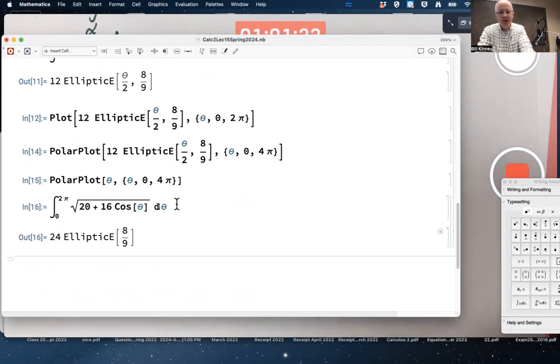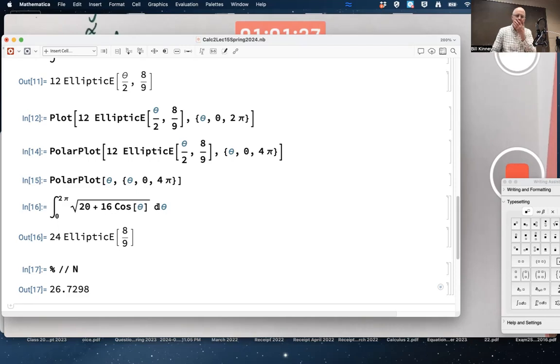There, here's an exact form that's approximately, well, bigger than that, 26.7. Okay, so I wasn't taking into account how long the loop really was, evidently. So, that's our point.